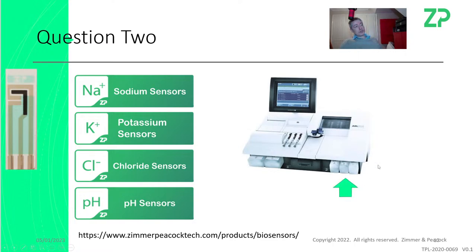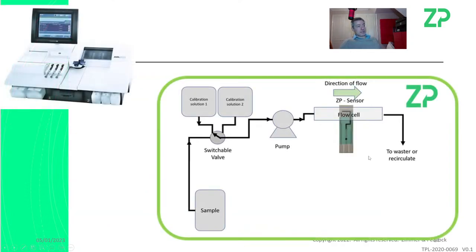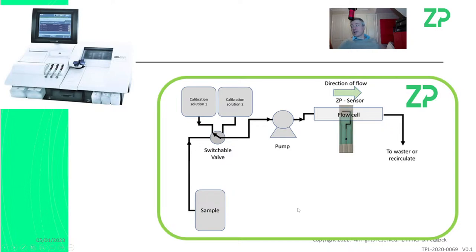When you look at the Radiometer blood analyzer, they have calibration solutions, wash solutions, and a pump system. It's not enough to just get our electrodes — you have to work with ZP because the electrodes must be used in the total system. Our potassium sensor, for example, can be used in whole blood — that's what it was developed for.